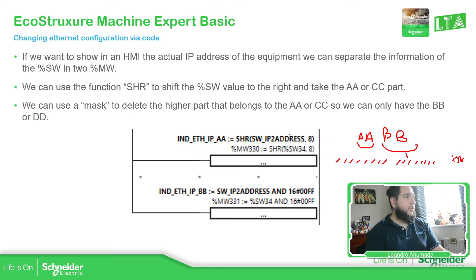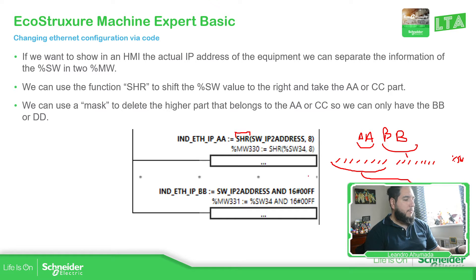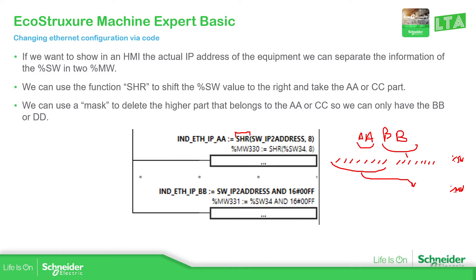To separate the two parts, if we use shift right by 8, what we're doing is moving the upper byte into the lower position and assigning it to a new %MW variable — so we get AA only. For the second part, to get BB, we use an AND operation, masking out the upper eight bits, so we only get the BB value, and assign it to a new %NW variable.